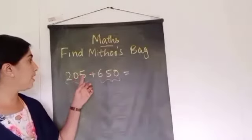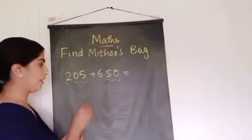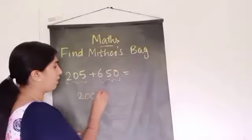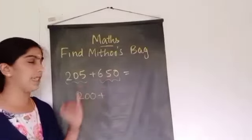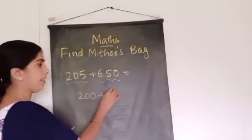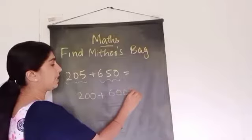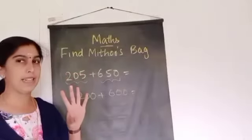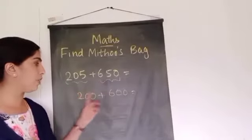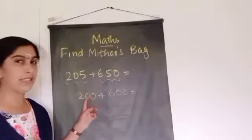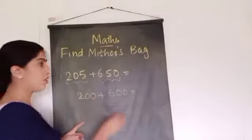200 and 600. 200 plus, you don't have to write it in your paper or anywhere. 200 plus 600. Just calculate in your mind. That is 200 plus 600, 800. Or you can take these two numbers. 2 plus 6, 8. Then 5 zeros. So 800.